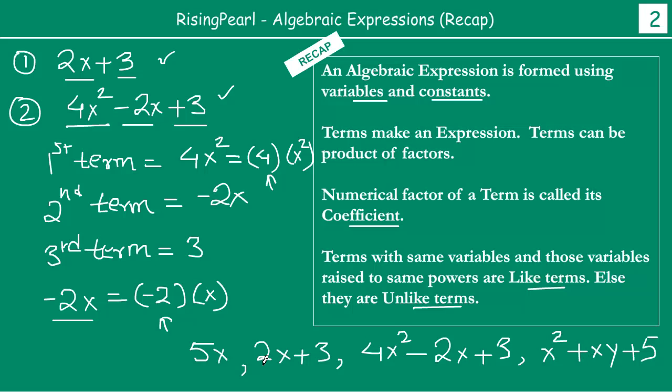In these expressions, you'll see there are terms. Just like the first expression, here x has power one. In the second expression also you have two terms here. In one term, x has power one. So if you compare both expressions, 5x and 2x are like terms. Because here variables are the same - both x and x. And the variables are raised to the same power - one and one. So terms with same variables and those variables raised to the same power are called like terms. Else they are unlike terms.